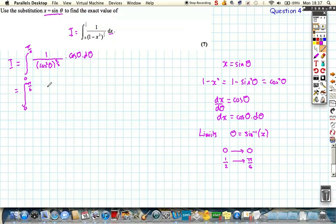So really, we've got on the bottom a cos cubed theta, and we've got a cos theta on top, so that means we're actually just going to get a denominator of cos squared theta respect to theta.